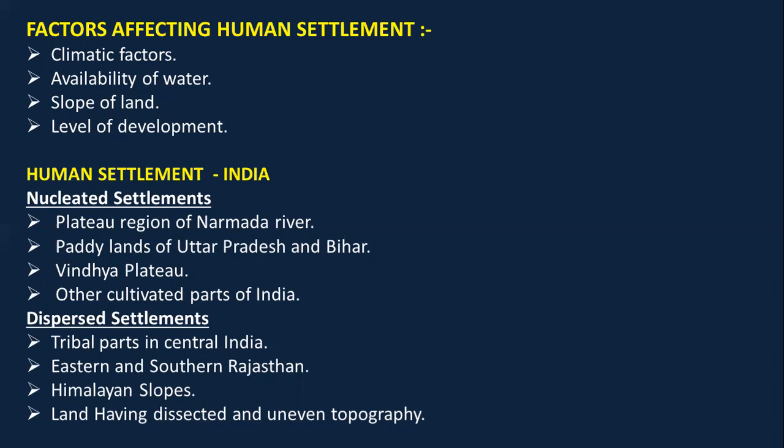Settlement in India is of two types: nucleated and dispersed. Nucleated settlement — where people live in clusters close together — is found in the plateau region of the Narmada river, in the paddy lands of Uttar Pradesh and Bihar, the Vindhya plateau, and other cultivated parts of India. Wherever population is nucleated, that place receives heavy rainfall or is near a river, making agriculture easier.